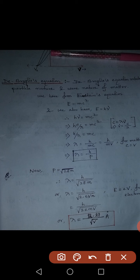We also have the formula c = λν, so from this ν = c/λ. Substituting in place of ν, we get hc/λ = mc². One c cancels from both sides, giving us h/λ = mc, or λ = h/mc.